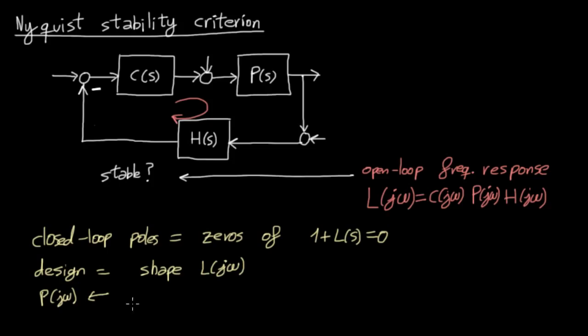Moreover, on some occasions we have the frequency response of the plant obtained by experimentation, but we don't have its transfer function. In those cases, the Nyquist criterion comes in handy, because it allows us to use directly the result of our experiments.